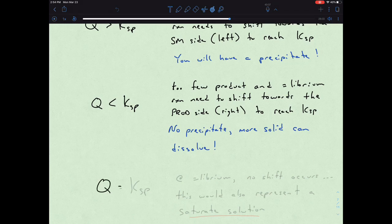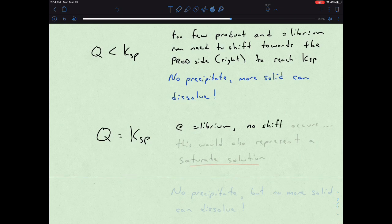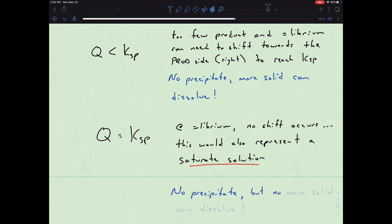If Q is equal to Ksp, then we are basically at equilibrium. No shift occurs. And this would also represent a saturated solution in that particular scenario. So in this case, there's no precipitate, but no more solid can dissolve.